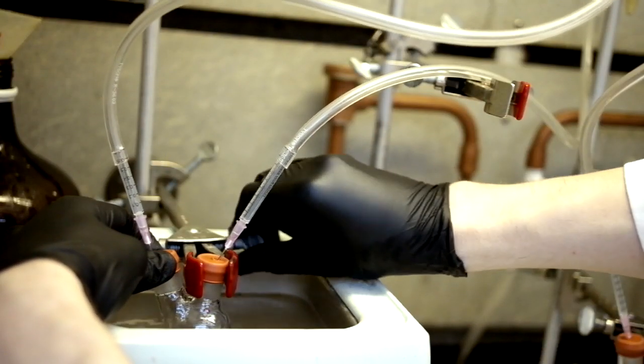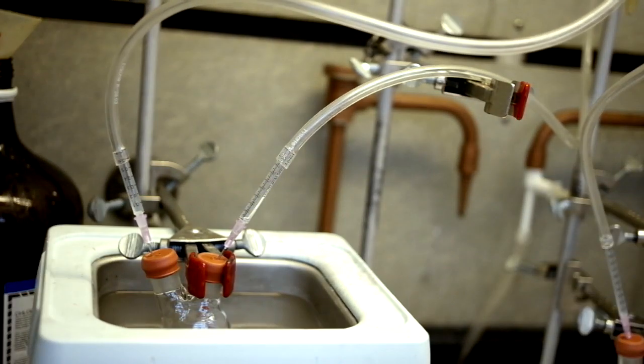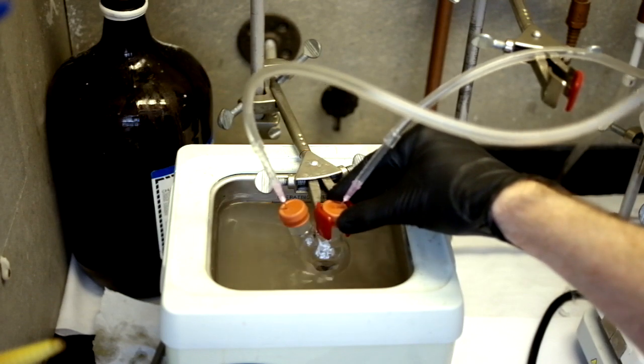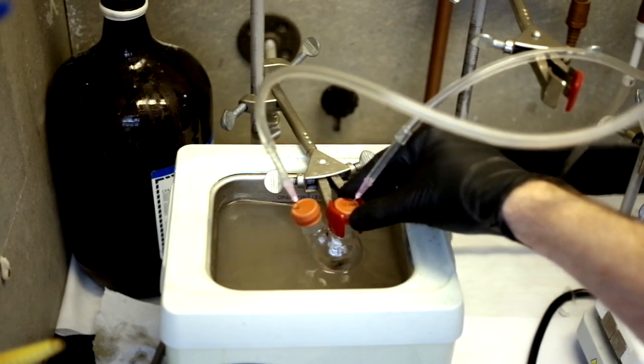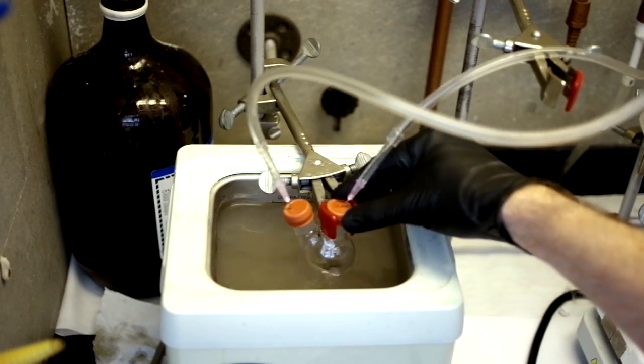Place the precursor flask into the sonicator and sonicate for several minutes until the selenium completely dissolves. It will be necessary to shake the flask several times during this process to ensure that all the material is completely dissolved.